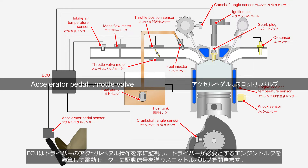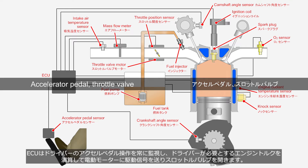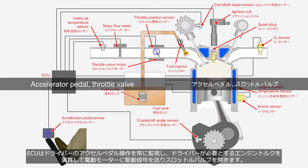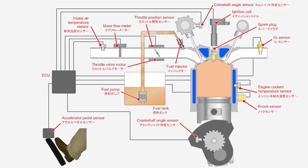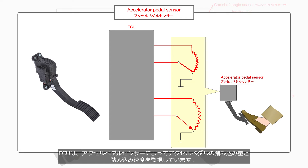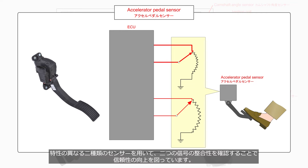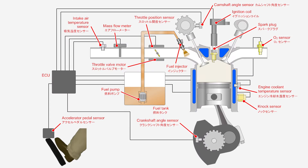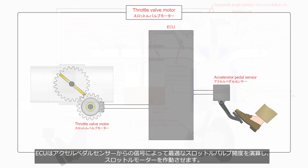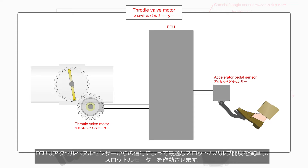The ECU constantly monitors the driver's accelerator pedal usage, calculates the required engine torque, and sends a drive signal to the electric motor to open the throttle valve. The ECU monitors the accelerator pedal opening angle and opening velocity through the accelerator pedal sensor, utilizing two sensors with different characteristics to improve reliability. The ECU calculates the optimal throttle valve opening based on the signal from the accelerator pedal sensor and activates the throttle motor.